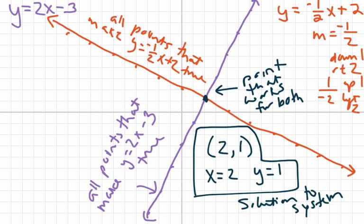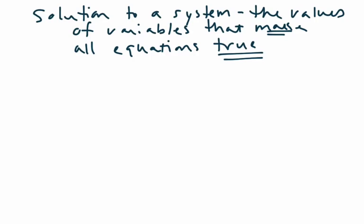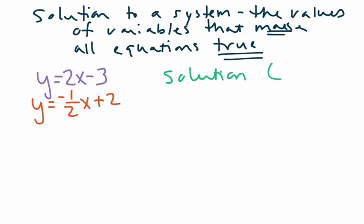And that is the solution to the system. Take a moment, if you're watching this video at home, take a moment and pause the video and just let yourself think through why this concept makes sense. So this was my system. I had y equals 2x minus 3. And I had y equals negative 1 half x plus 2. And the solution was the point 2, 1. So I just want to demonstrate why that works as the solution.